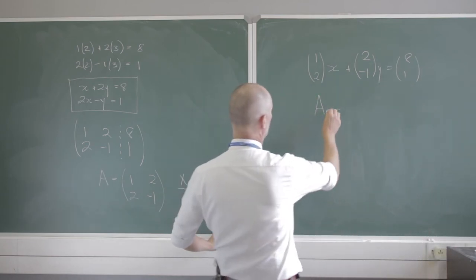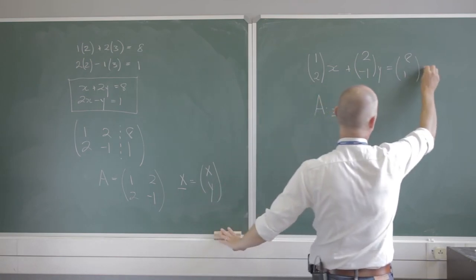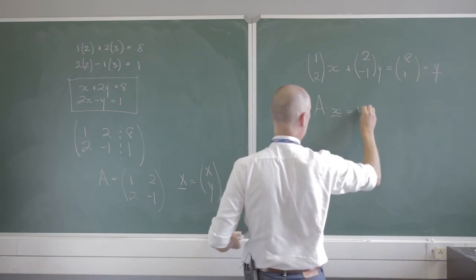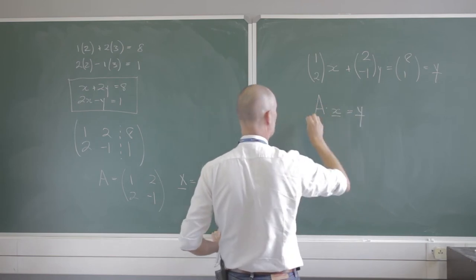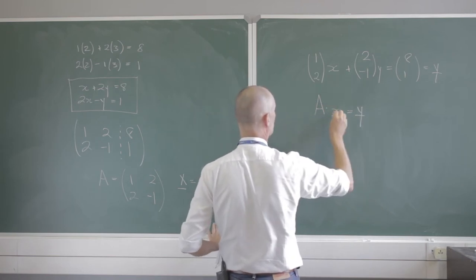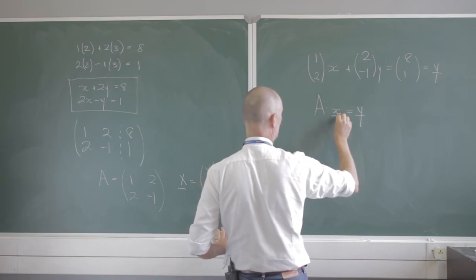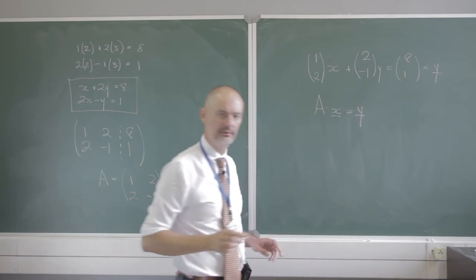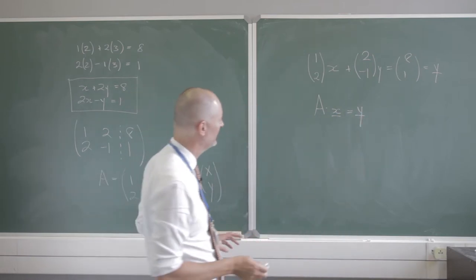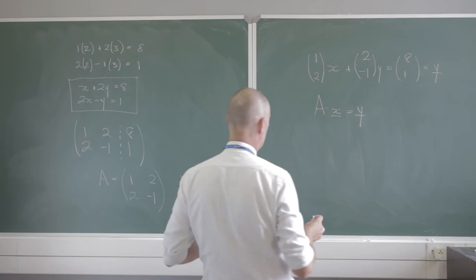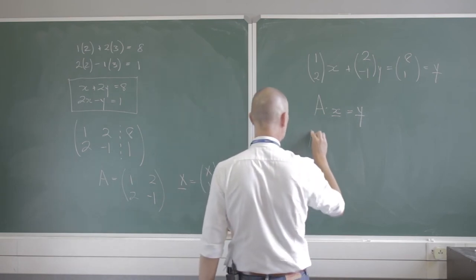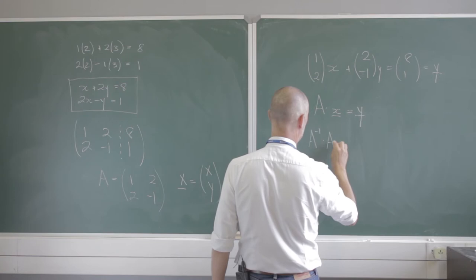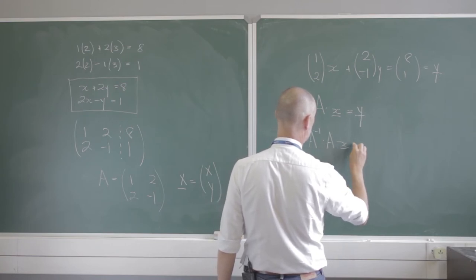A times x, and if I let this equal my column vector y, I have the following fact: if I take a matrix and multiply it by my vector of unknowns, it gives me my vector of solutions. That's a very beautiful thing.